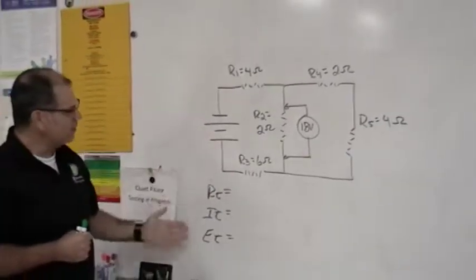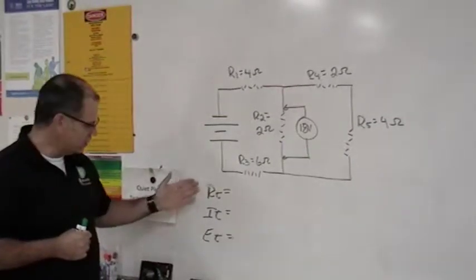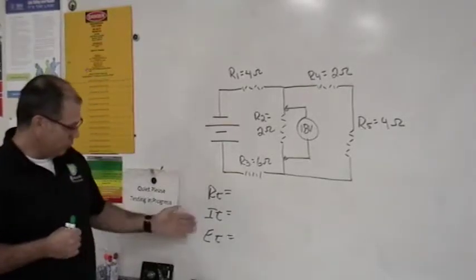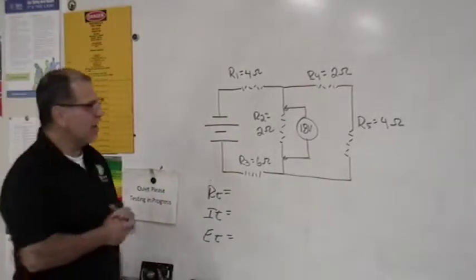So these are the values that we've got to try to solve for. We've got to try to solve for total resistance, total current, and then total voltage. So the way I would attack this, I could say, okay,